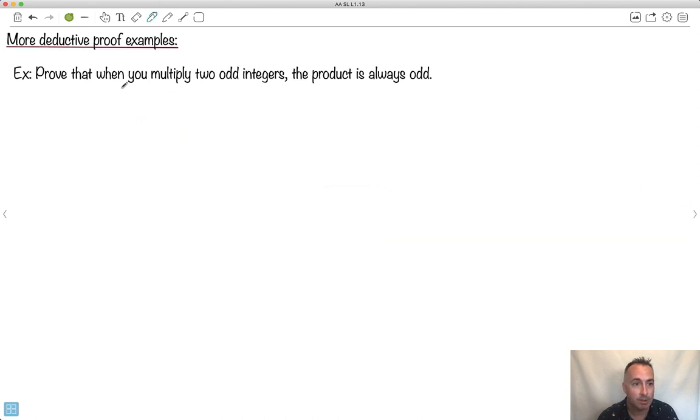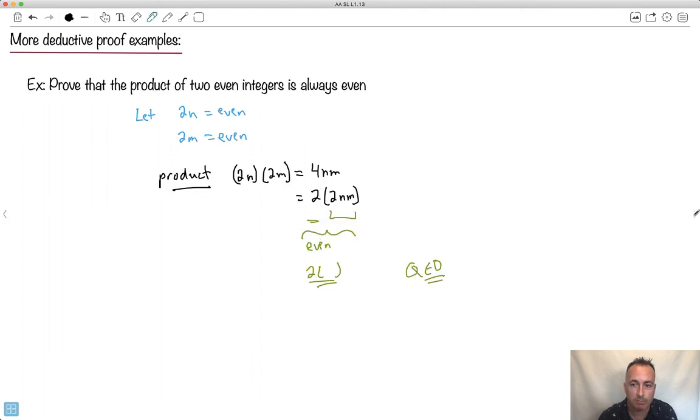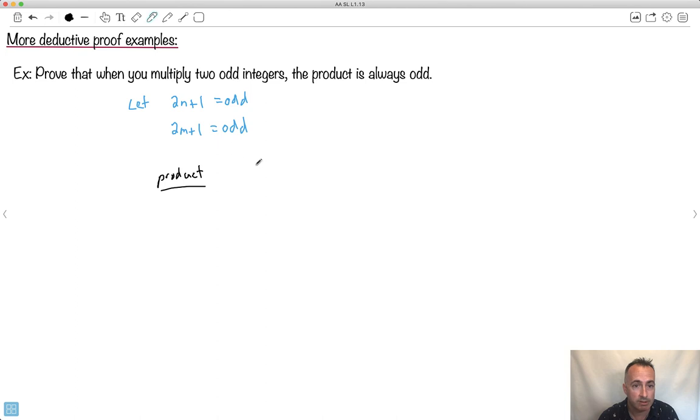Last one. Prove that when you multiply two odd integers, the product is always odd. Let me make 2n plus 1 be some odd number. I need another odd integer. So I'll make it 2m plus 1. That's another odd one. Let's multiply them. So the product. I'll do 2n plus 1 times 2m plus 1. Let's figure this out.